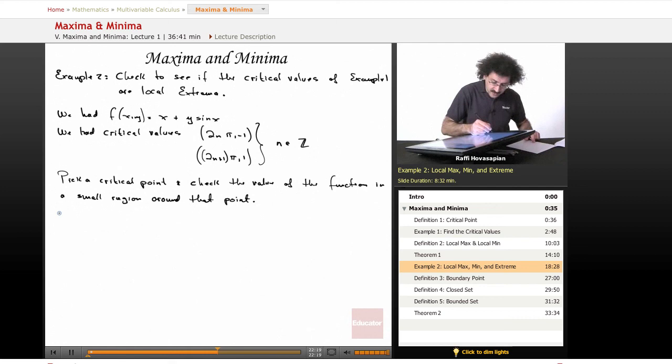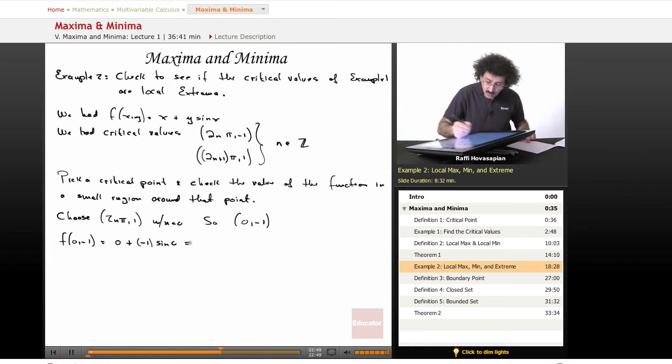Now let's just choose 2n pi, 1, with n equals 0. So, I'm just going to pick the easiest point, 0, negative 1. So that's going to be our critical point P. Well, let's go ahead and find what the value of the function is at 0, negative 1. So the function is x plus y sine x, so it's 0 plus negative 1 times the sine of 0, which is 0. So the value of the function there is 0.